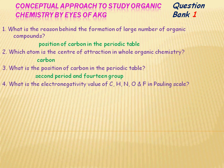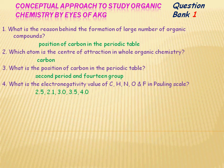What is the electronegativity value of carbon, hydrogen, nitrogen, oxygen, and fluorine on the Pauling scale? These are some general atoms which form organic compounds, so their electronegativity values must be known by students. The electronegativity value of carbon is 2.5, hydrogen is 2.1, nitrogen is 3.0, oxygen is 3.5, and fluorine is 4.0.